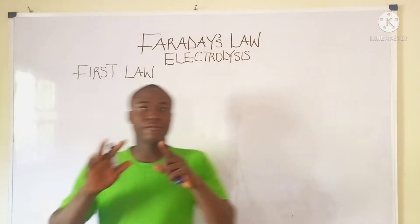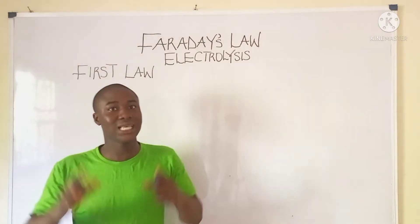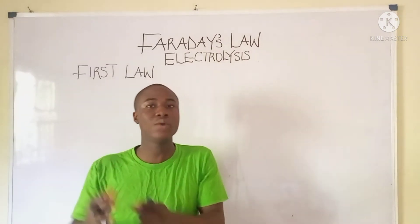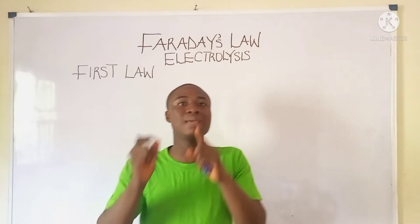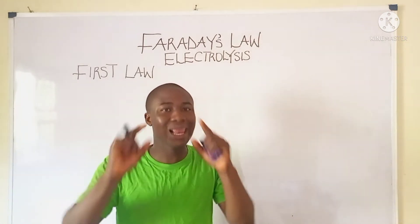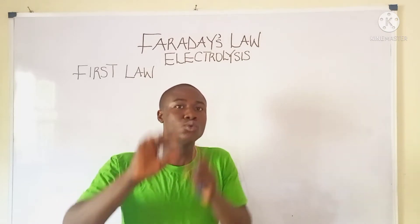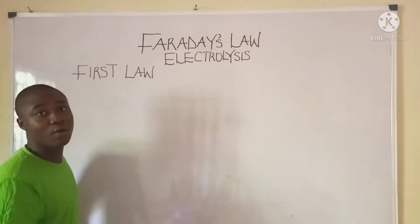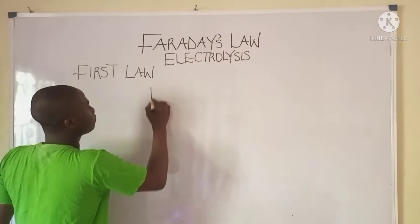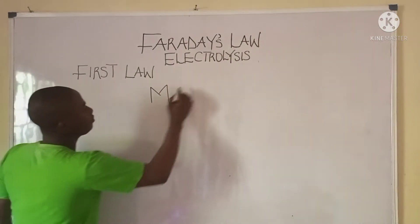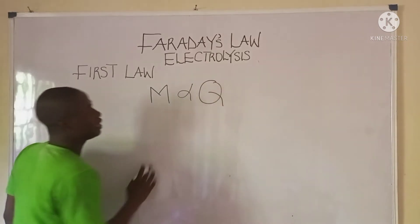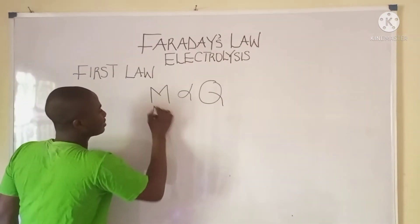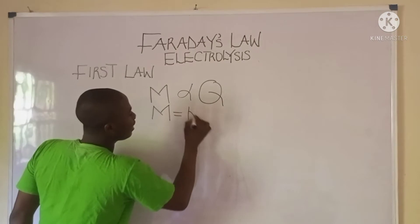Faraday's first law of electrolysis states that the mass of a substance deposited during electrolysis is directly proportional to the quantity of electricity that passes through the electrolyte. Mathematically, mass is directly proportional to quantity of electricity, which is given the symbol Q. Bringing in a constant, mass becomes kQ.